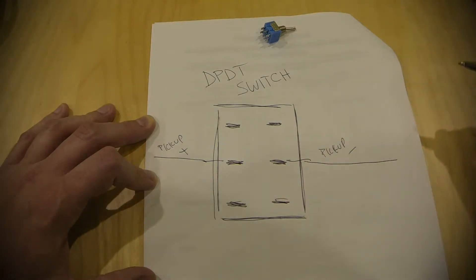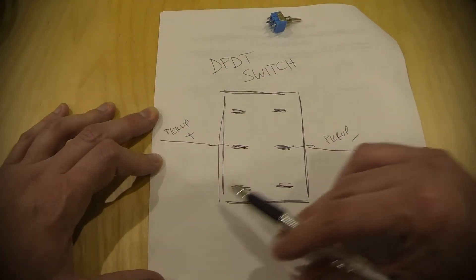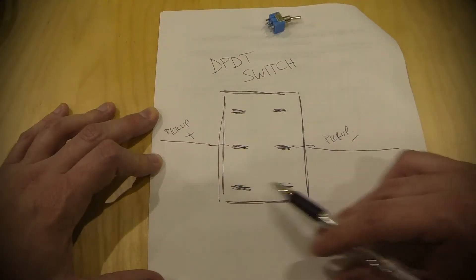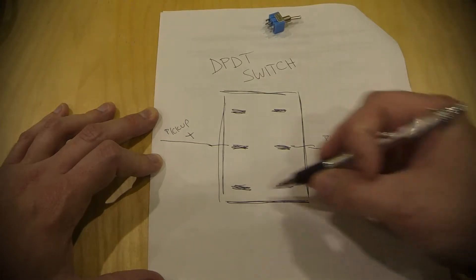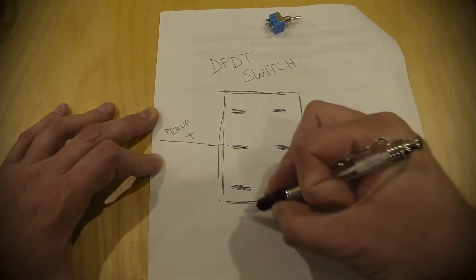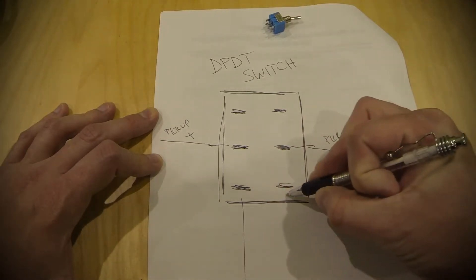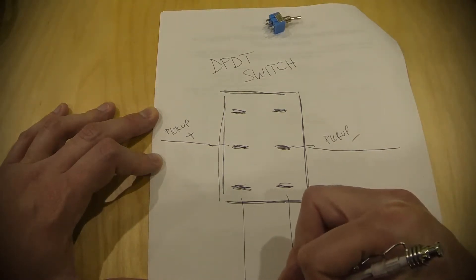Now, in order to reverse these, it's actually really simple. All you're going to do is you're going to take two of the other pins, the ones on the same side of the switch for each of the individual circuits, and you're going to send this to your switch.